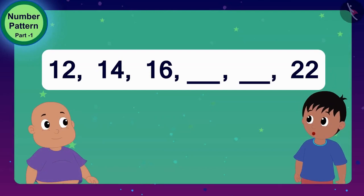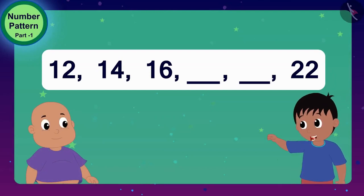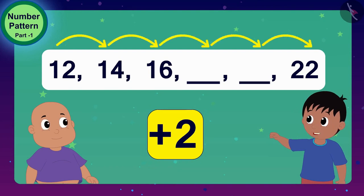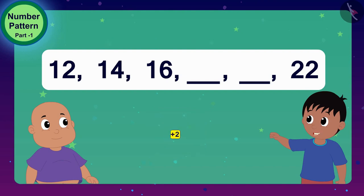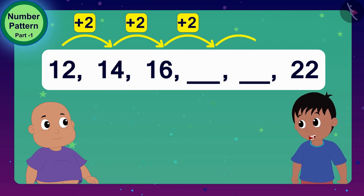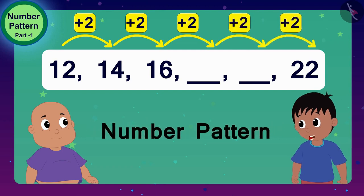Look, Bablu, I got the rule of these numbers. When 2 is added to each number, the next number is found. And Bablu, do you know — such groups of numbers in which numbers follow a particular rule, we call them number patterns.